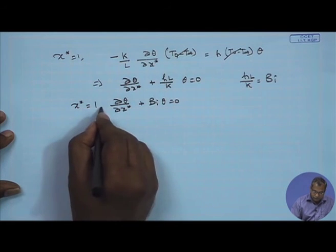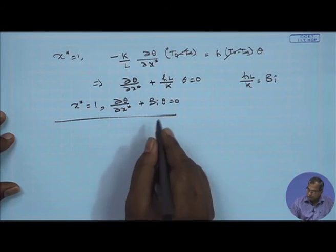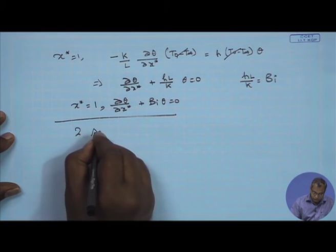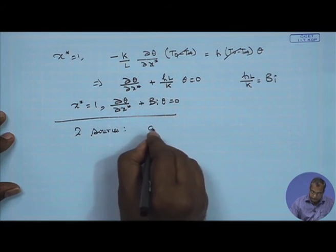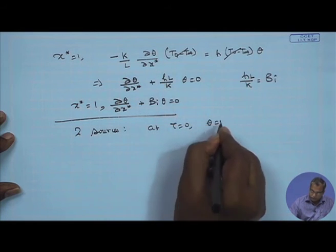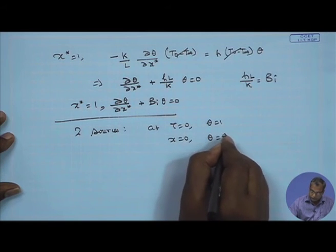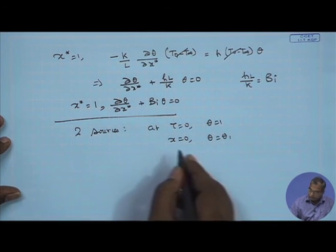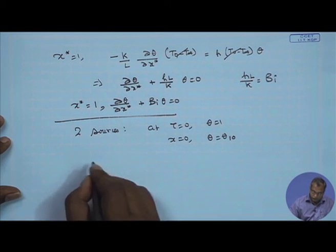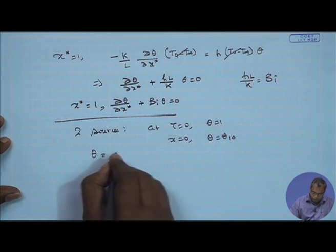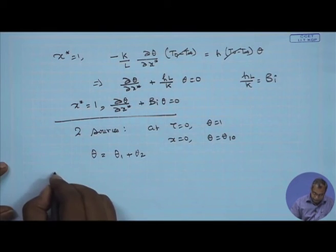In this problem there are two sources of non-homogeneity: the initial condition at tau=0 where theta=1, and the boundary condition at x*=0 where theta equals theta_1_naught. We divide this into two sub-problems, considering one non-homogeneity at a time as done earlier.